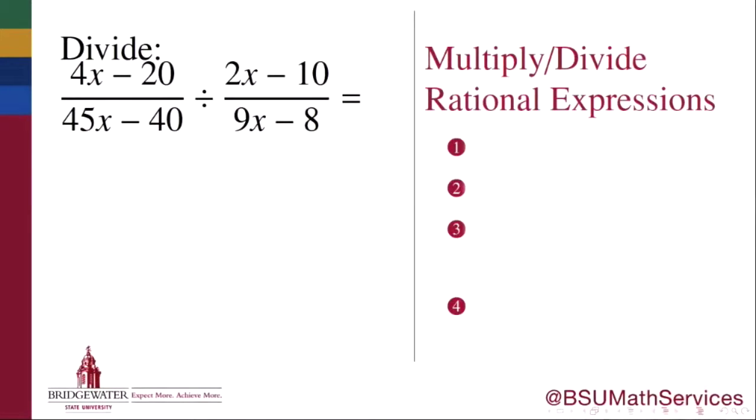Rational expressions are nothing more than fractions whose numerator and denominator happen to be polynomial expressions with variables in them. But because they are fractions, the arithmetic that we do with rational expressions happens in exactly the same fashion as the arithmetic that we do with rational numbers, fractions whose numerator and denominator are just numbers.